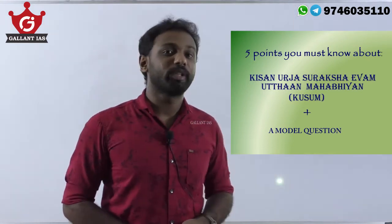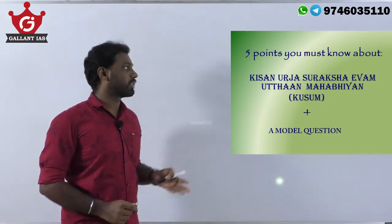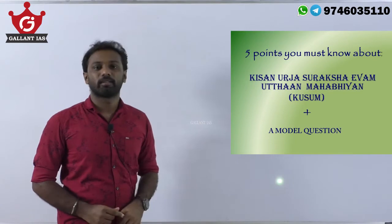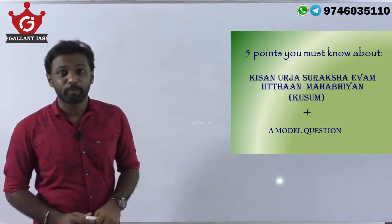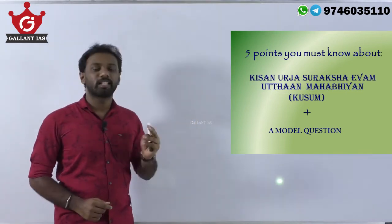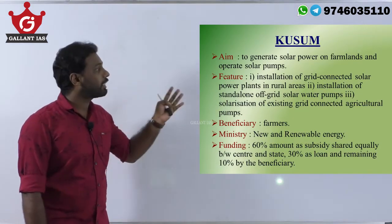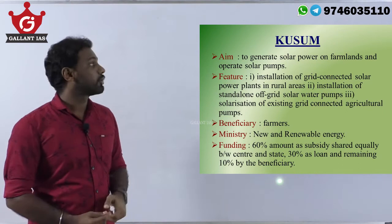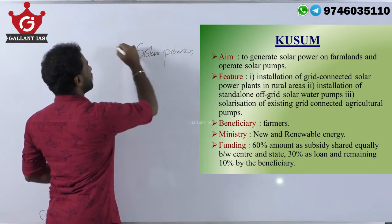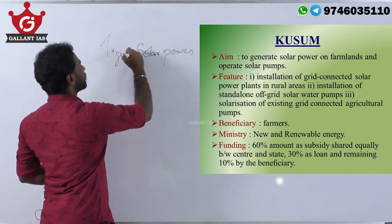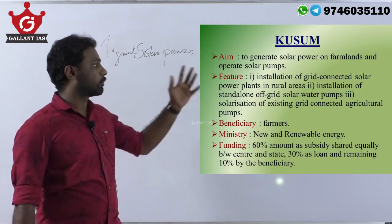Here comes a scheme by the Ministry of New and Renewable Energy called Kusum — that is, Kisan Urja Suraksha Evam Utthan Mahabhiyan. In this video, let's discuss the core features of the Kusum scheme, and at the end we will discuss a model question strictly based on the UPSC pattern. The main aim of the scheme is to generate solar power on farmlands and to operate solar pumps — that is the core objective of the Kusum scheme.